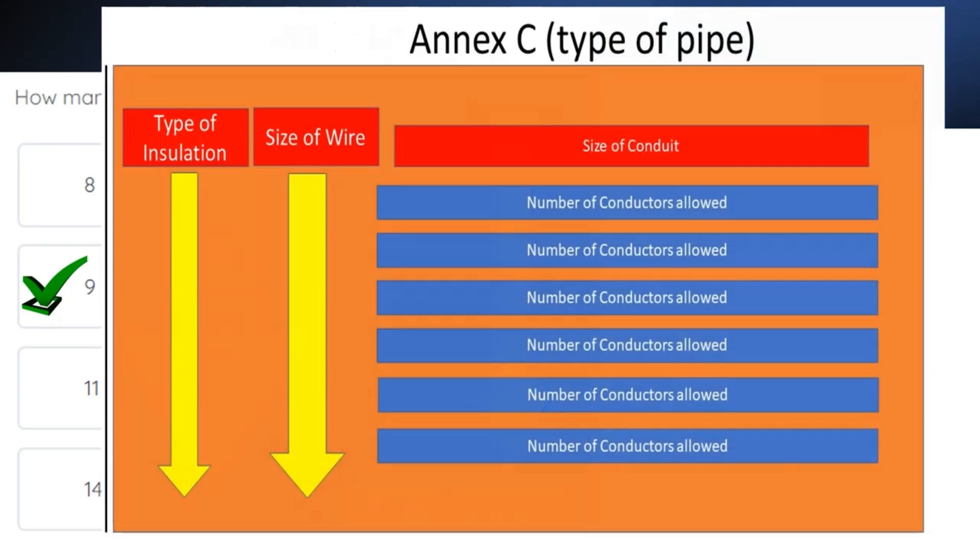Then, when we find our page number, we head over to Annex C. And before we do anything, we always read at the top of the table to make sure that we're not in one of the A versions of the table.